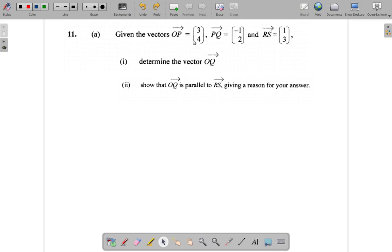Part (i): Determine vector OQ. Alright, OP is (3, 4). First of all, let's look at an x and y axis we have here. OP is (3, 4). We have (-1, 2), and (1, 3).